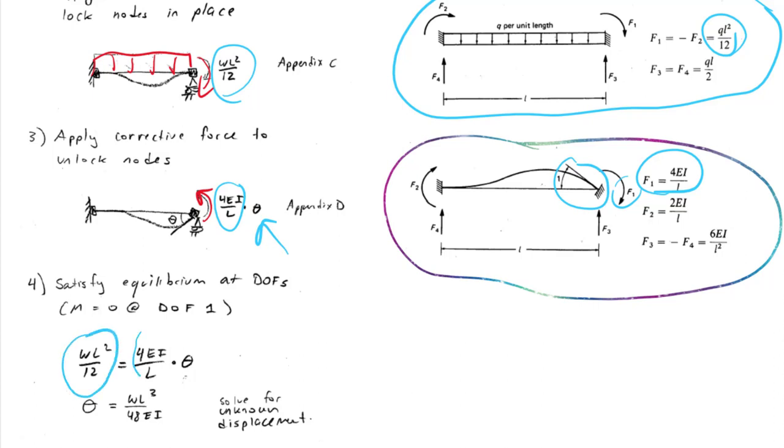Taking from step 3 the value 4EI over L times the scaling factor theta. We can solve this for theta to get that theta is equal to WL cubed over 48EI.